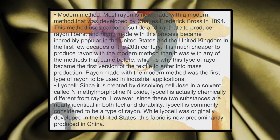Most rayon is now made with a modern method developed by Charles Frederick Cross in 1894. This method uses carbon disulfide and xanthate to produce rayon fibres, and rayon made with this process became incredibly popular in the United States and the United Kingdom in the first few decades of the 20th century. It is much cheaper to produce rayon with this method than with any of the methods that came before, which is why this type of rayon was the first version of textile to enter mass production and the first to be used in industrial applications.